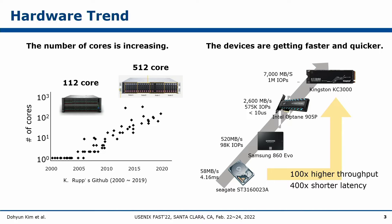Recently, the number of cores in a single server is rapidly increasing, and devices are getting faster. Some servers support more than 100 cores, and storage devices have achieved 100 times higher throughput and 400 times shorter latency than hard disk drives. So the modern file system design, implemented in the 1980s, faces new challenges such as many-core scalability.